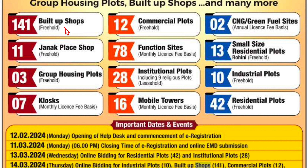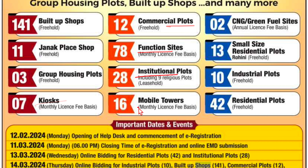There are different categories included in this e-auction: built-up shops, Janakpuri shops, group housing plots, kiosks, commercial plots, functional sites, institutional plots, mobile towers, CNG/green fuel sites, small-size residential plots, industrial plots, and residential plots — all listed as separate segments.